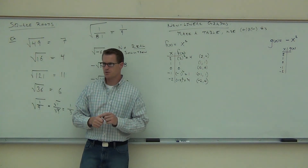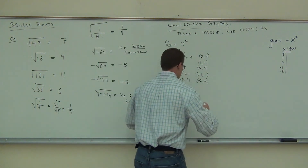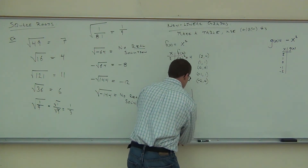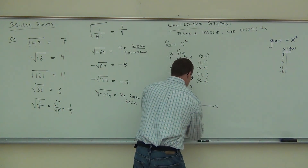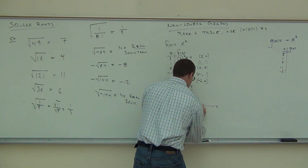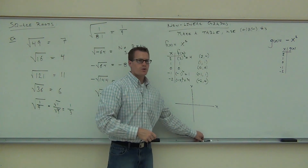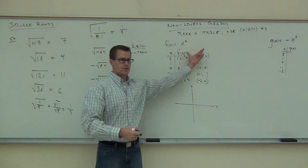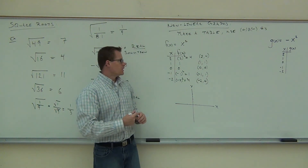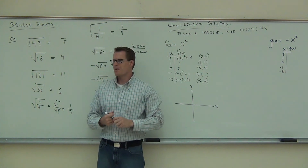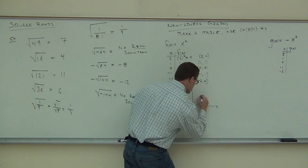Now you can see where those numbers come from. Let's graph it and see what this thing does. The hard part is actually plugging things in — once you do that, it's just plotting points and seeing what the shape is. First point was (2, 4): go over two, up four, and that's where you put your point.